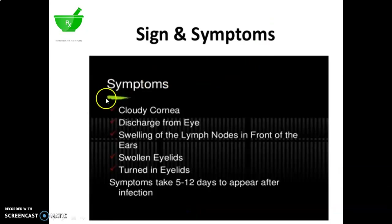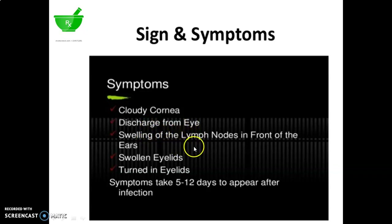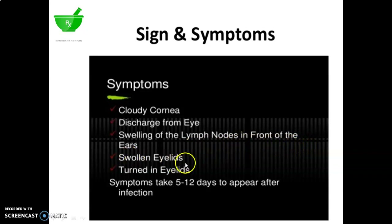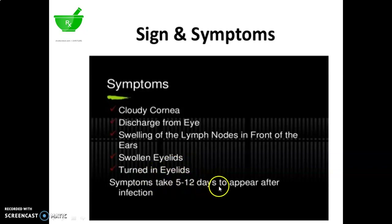Signs and symptoms: cloudy cornea, discharge from the eye, swelling of the lymph nodes in front of the ears, swollen eyelids, turned-in eyelids. Symptoms take 5 to 12 days to appear after infection.